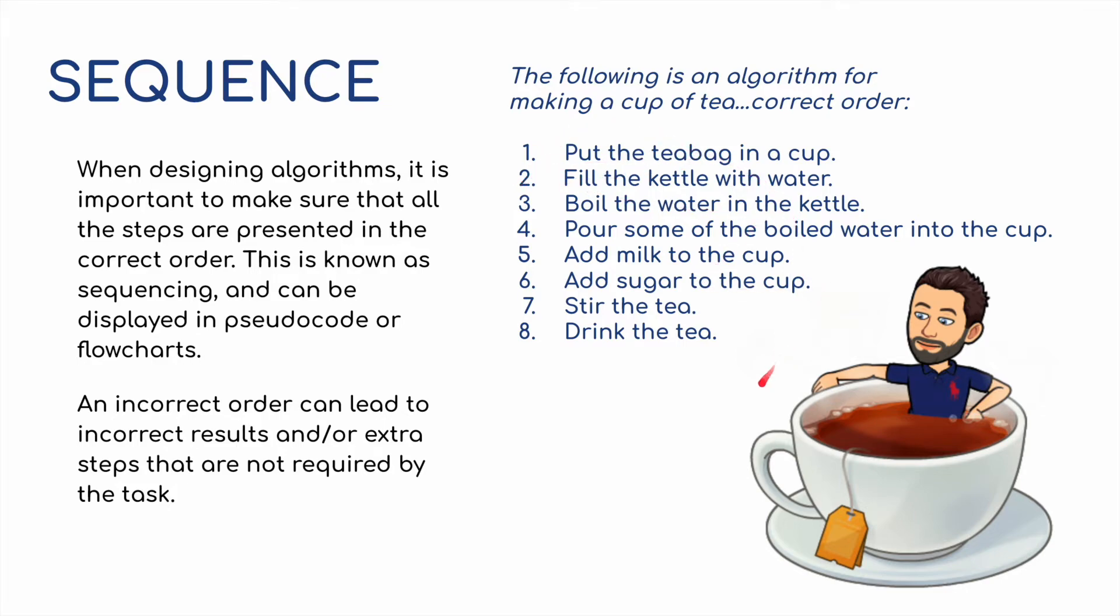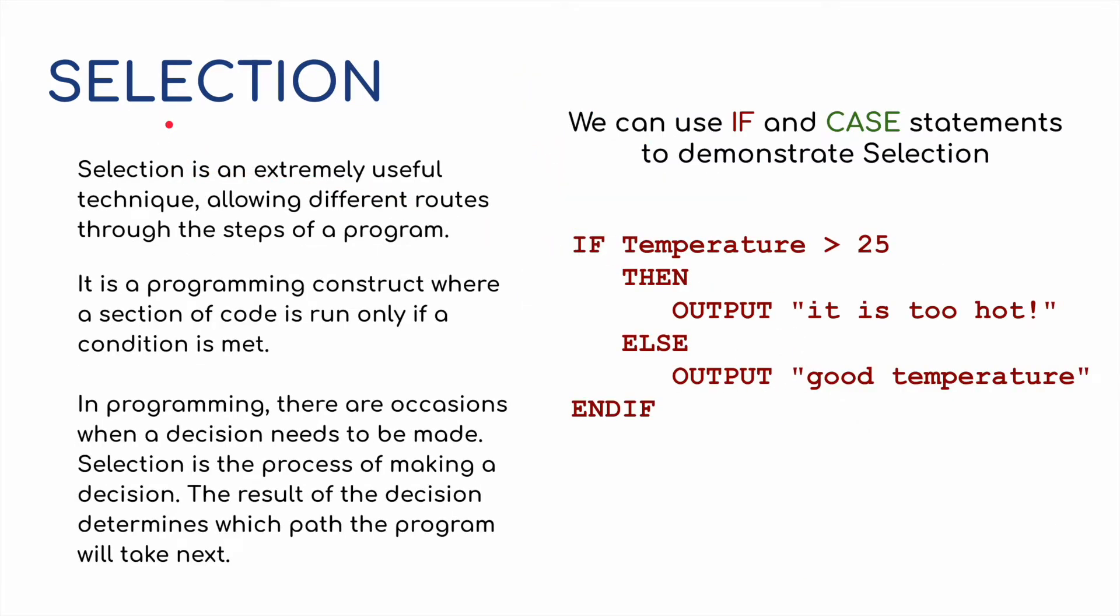We move on then to selection. This is an extremely useful technique allowing different routes through the steps of a program. Usually if and case statements are used in terms of selection. It is a programming construct where a selection of code is run only if a condition is met. In programming there are occasions when a decision needs to be made. Selection is the process of making a decision. The results of the decision determines which path the program will take next.